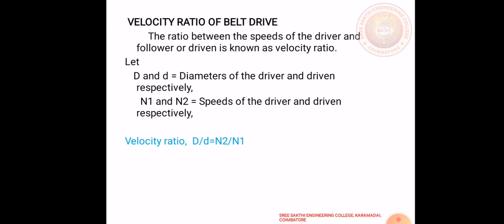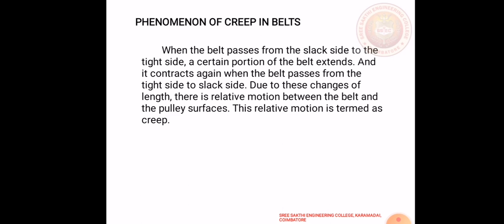Next, the velocity ratio of the belt drive. The ratio between the speeds of the driver pulley and driven pulley is known as the velocity ratio. It is denoted by D/d = N2 divided by N1. That is the formula for the velocity ratio of the belt drive.